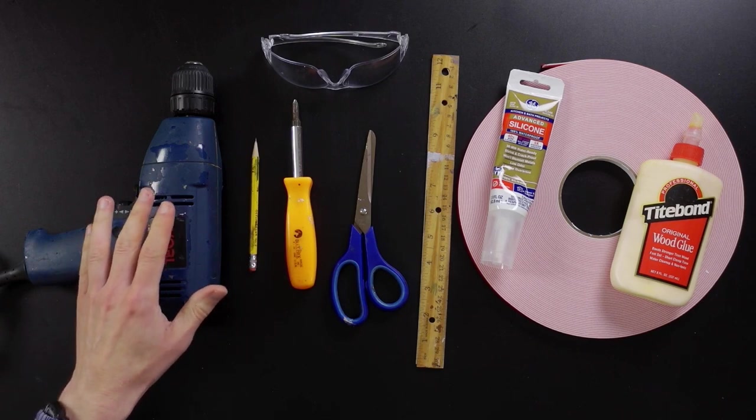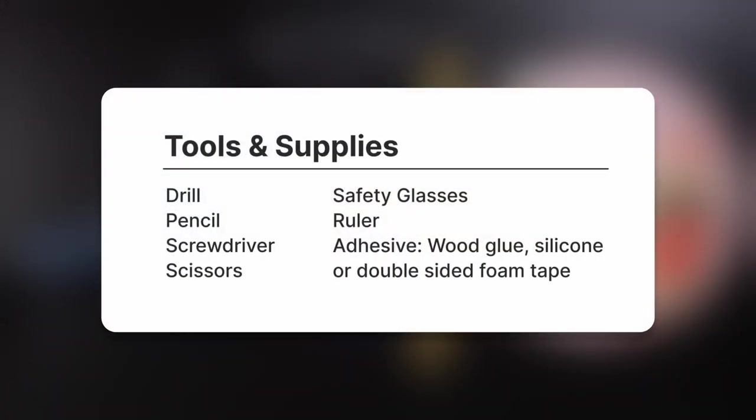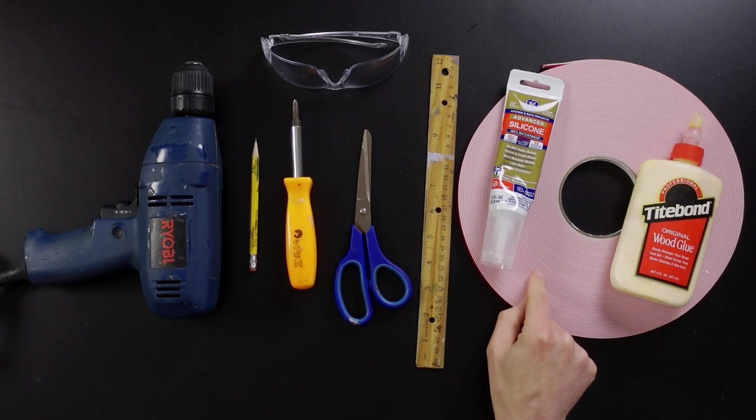So a floater frame is really easy to use. You don't need that many tools. All you need is a pencil, a ruler, a pair of scissors, wire cutters, and some type of adhesive. You can use wood glue, silicone, and I'm going to use foam tape for this one.